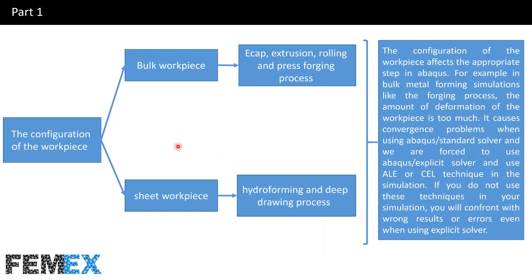First, I want to talk about the configuration of the workpiece. The workpiece that is going to be formed can be a bulk workpiece or a sheet workpiece. For bulk workpieces, there are many processes like ECAP, extrusion, rolling, and press-forging. For sheet workpieces, there are many processes too, like hydroforming and deep drawing. The configuration of the workpiece affects the appropriate step in Abaqus.